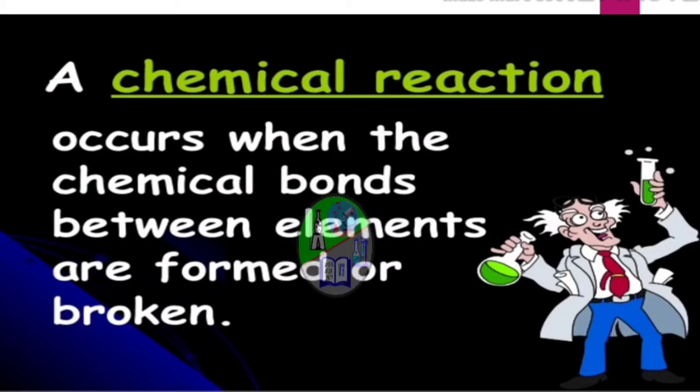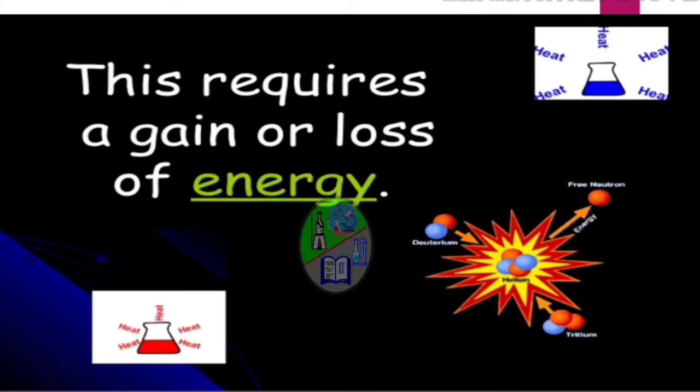A chemical reaction occurs when the chemical bonds between the elements are formed or broken. Now, the question arises is what are the chemical bonds? So, a chemical bond is an attraction between atoms, ions or molecules that enables the formation of chemical compounds. And for the reaction, gain or loss of energy is required.